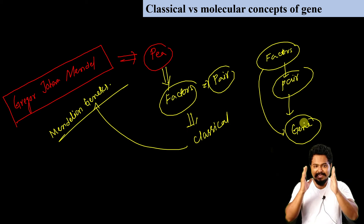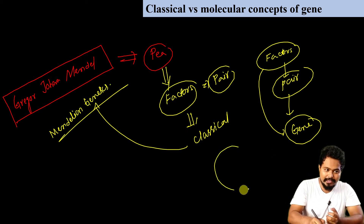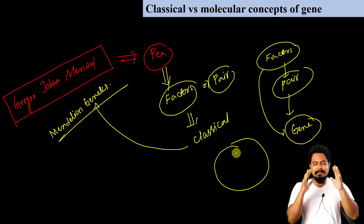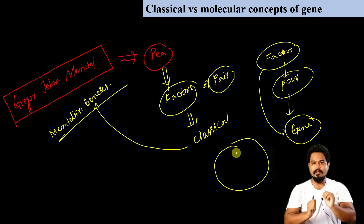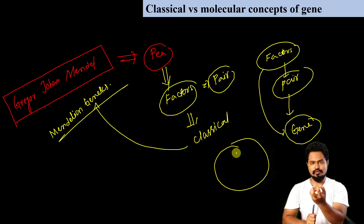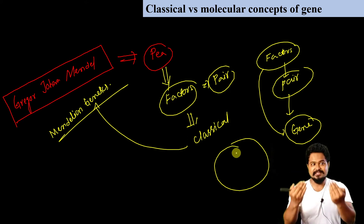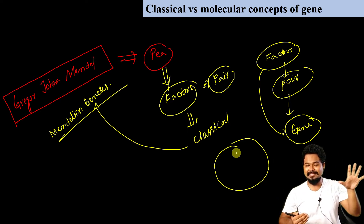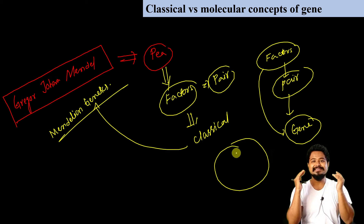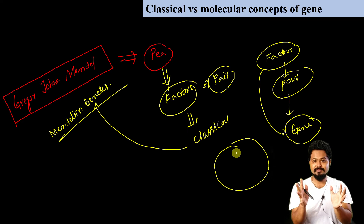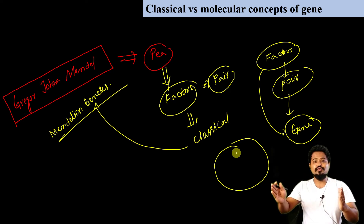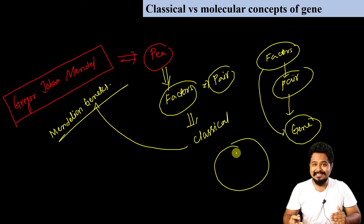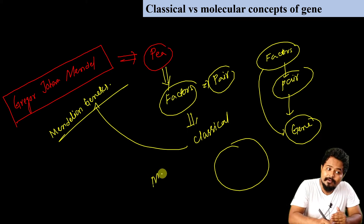The molecular concept — what Mendel called factors was mainly based on phenotypic observations: round, wrinkle — this is classical concept. This is phenotypic observation. Then the modern theory started with microscope discovery.